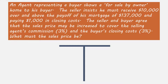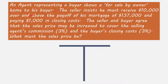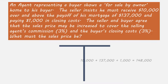This is what we call a seller's net question, not to be confused with the net listing, which we'll discuss at another time. First, we need the part. The part is what the seller needs at closing. The seller needs $10,000 over and above the payoff of his mortgage of $137,000, plus $1,000 in seller's closing costs. We need to add those three numbers to determine the seller needs to net $148,000 at closing.